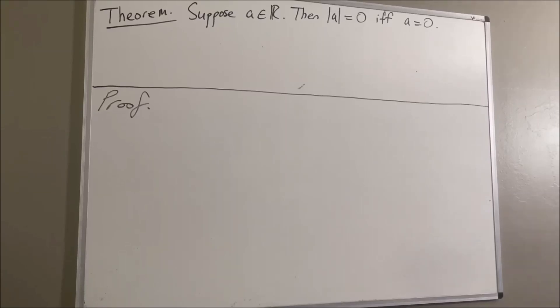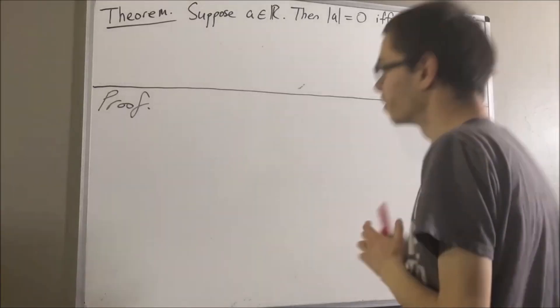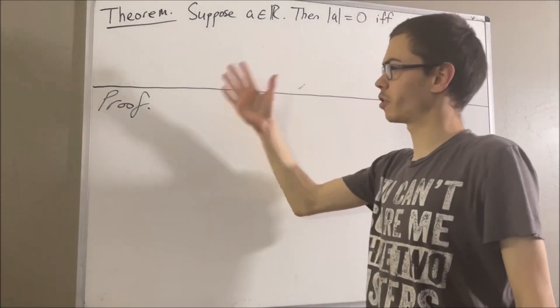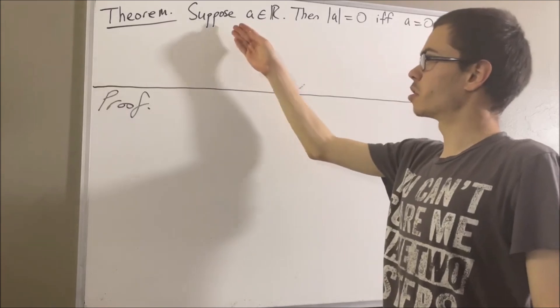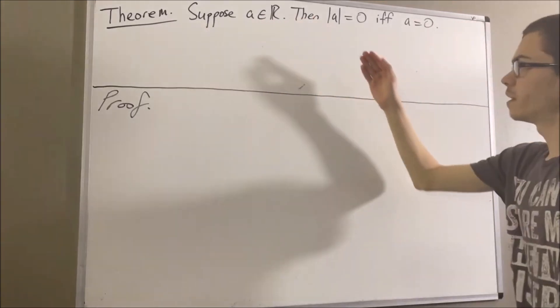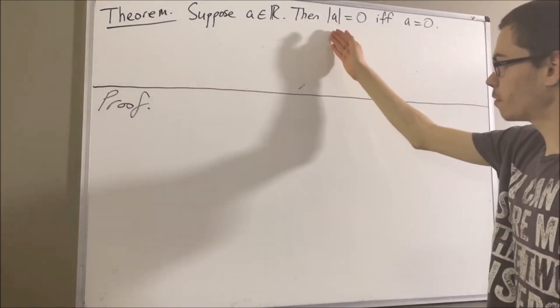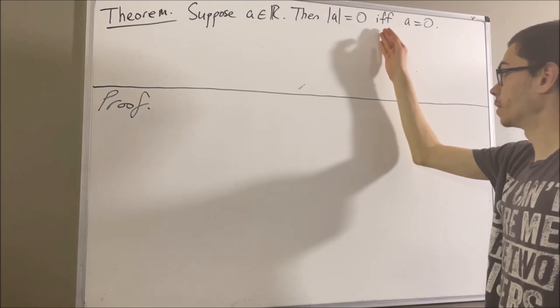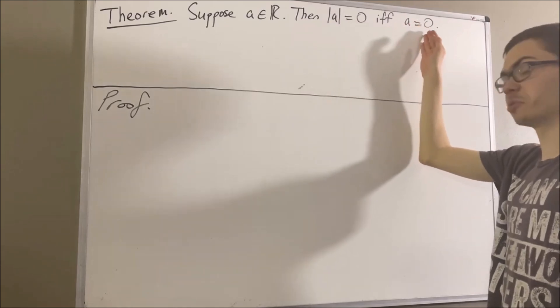Hello! In this video, we are going to prove the following theorem. Suppose a is a real number. Then the absolute value of a is equal to zero if and only if a is equal to zero.